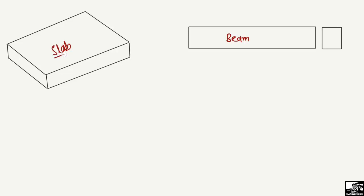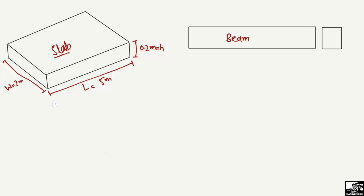For example, this is a slab with the following dimensions: the length of the slab is five meters, the width of the slab is two meters, and the thickness of the slab is 0.2 meters or 200 millimeters. This is the depth or thickness of the slab.